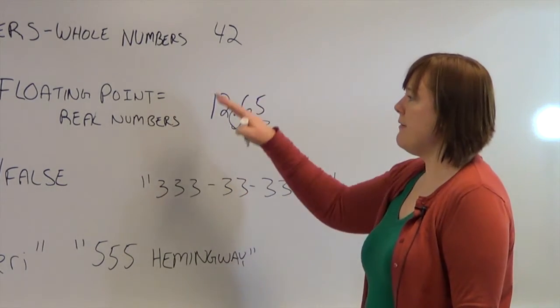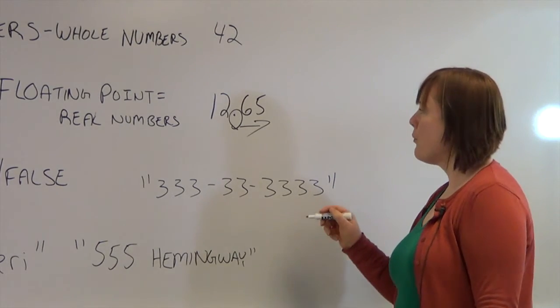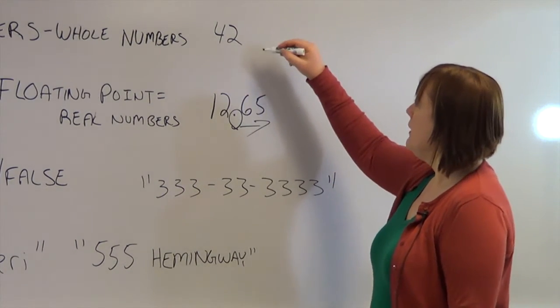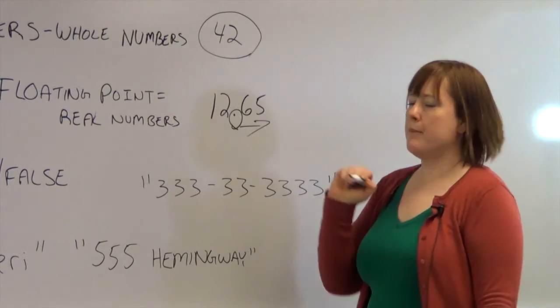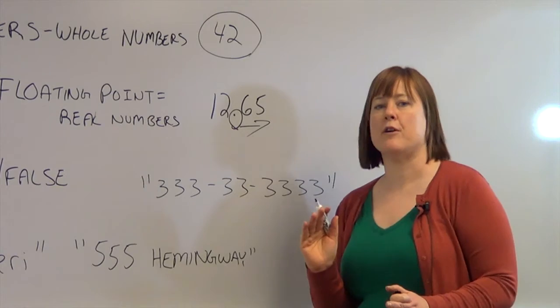So you can work with any of these three basic types of data. If you're working with something on its own, a number like this, if you're just using the number 42, that's considered to be a constant. It's an unnamed variable.